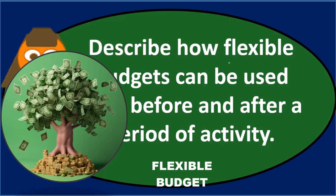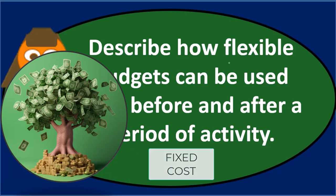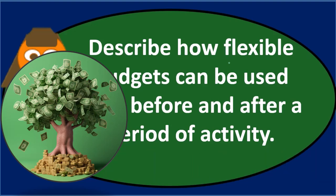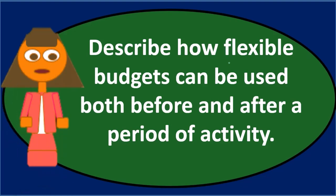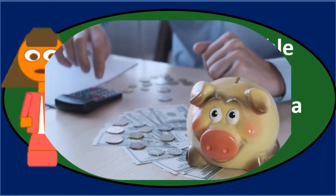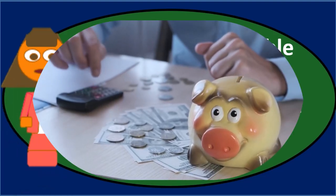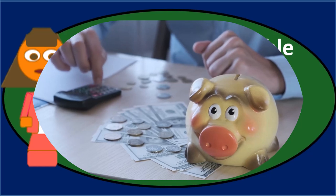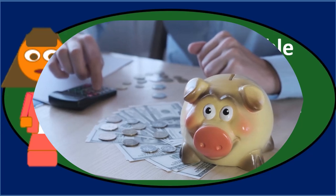The flexible budget format will therefore have sales minus variable costs, giving us the contribution margin, minus the fixed costs. So the format of the flexible budget breaks that information out by the behavior of the costs, which allows us to make the flexible budget flex — meaning we can make a different budget for different production levels.